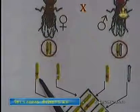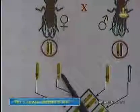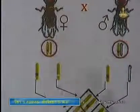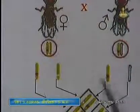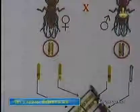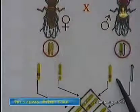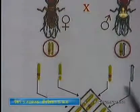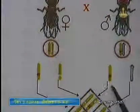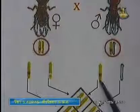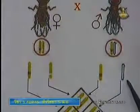The X chromosome carries the red eye allele, and the other X also carries the red eye allele. For the sperm of the male, there are two types: the X chromosome with the red eye allele, and the other type.